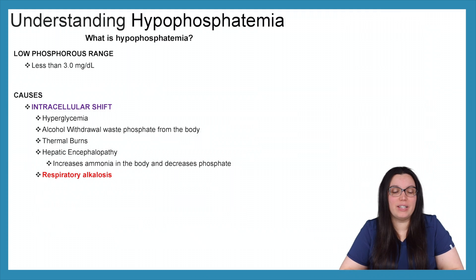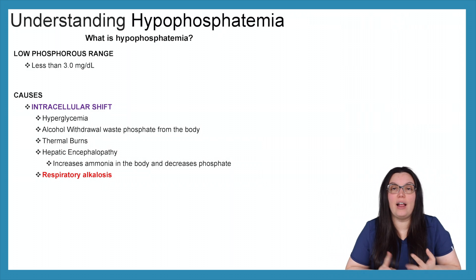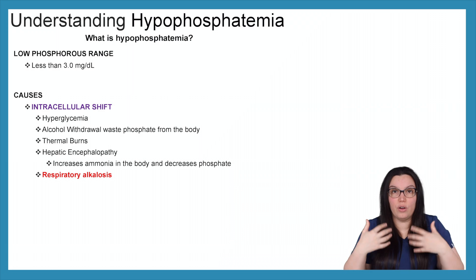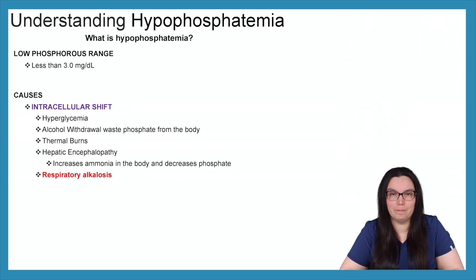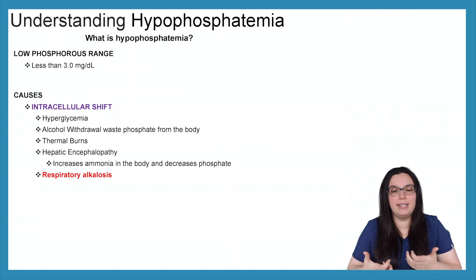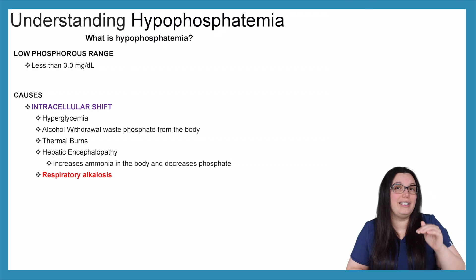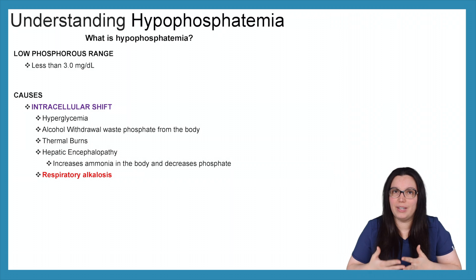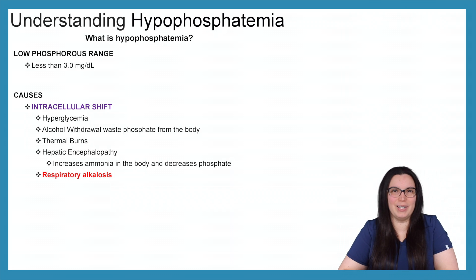Our last category for hypophosphatemia is intracellular shifting. With hyperglycemia and alcohol withdrawal, phosphate is severely wasted in the body. So when our alcohol withdrawal patients start withdrawing, you're going to see that decrease in phosphate. Thermal burns is another one, as well as hepatic encephalopathy — because hepatic encephalopathy increases ammonia in the body, ultimately decreasing phosphate. And lastly, you'll see hypophosphatemia with a lot of our respiratory alkalosis patients.